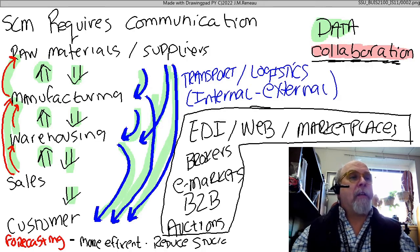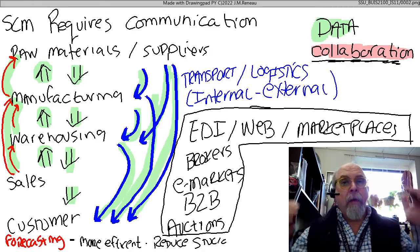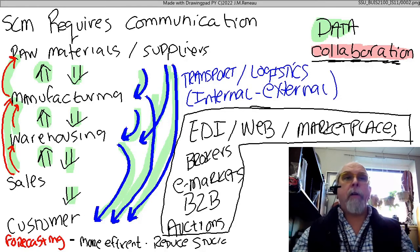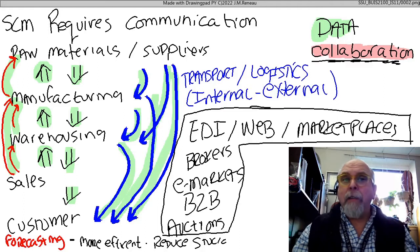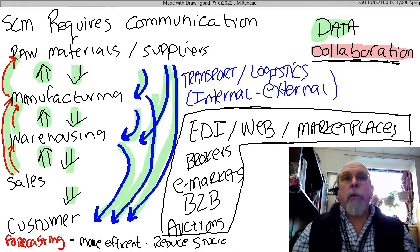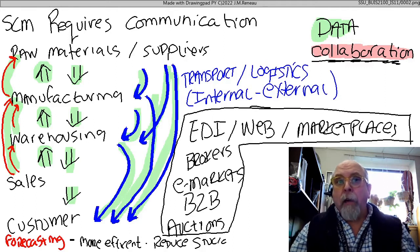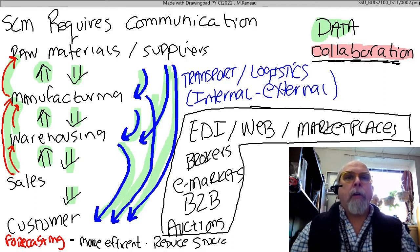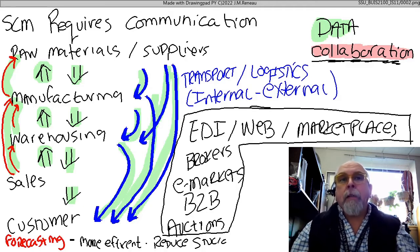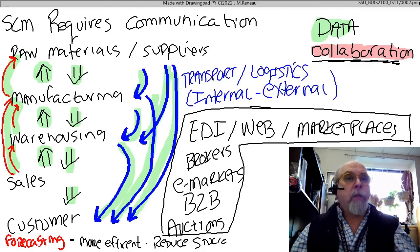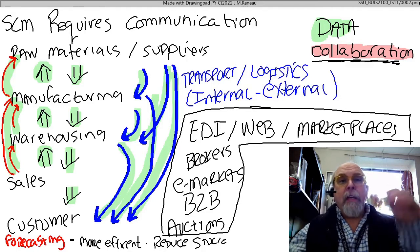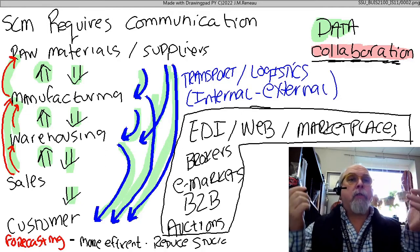The green arrows represent data flowing back and forth between all of the different parties. There's also another party: our logistics and transportation partners. From our internal partners using our own equipment and transportation, to our external partners like trucking companies, package delivery companies, the postal service, and lots of others. At each of these phases, we've got to deal with transportation.